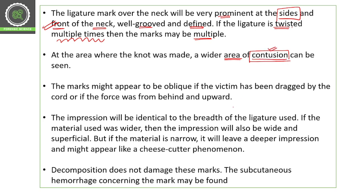At the area where the knot was made, a wider area of contusion can be seen. If the knot is made, visible and prominent contusion injuries will be seen over the area of the knot. The mark might appear oblique if the victim has been dragged by the cord or if the force was from behind and upward.